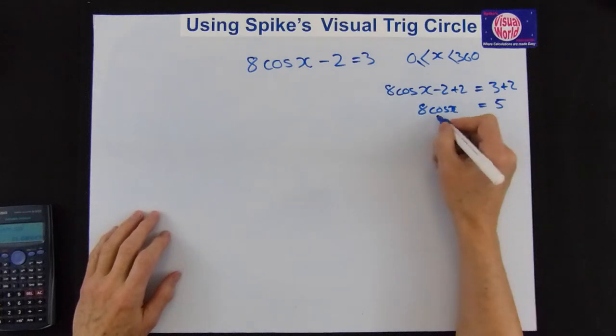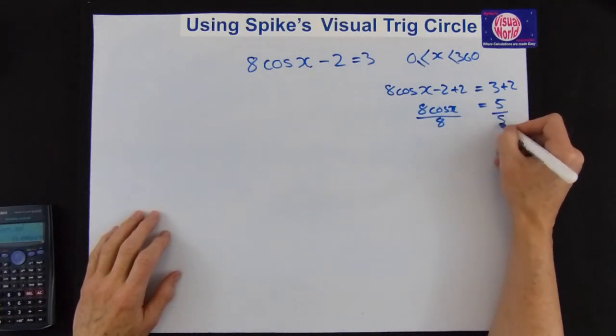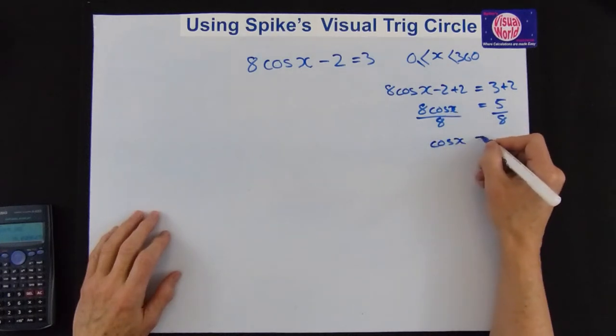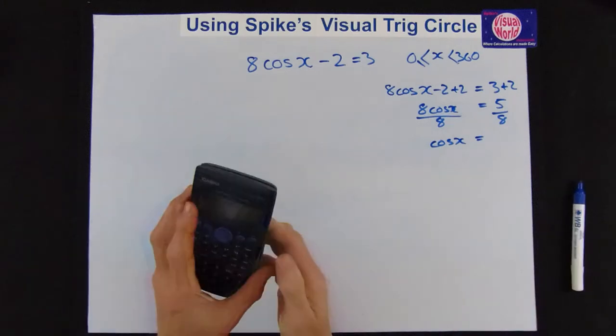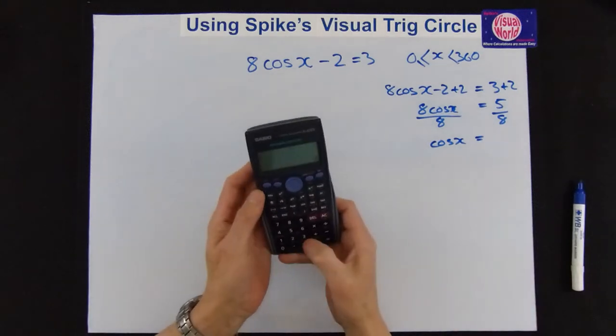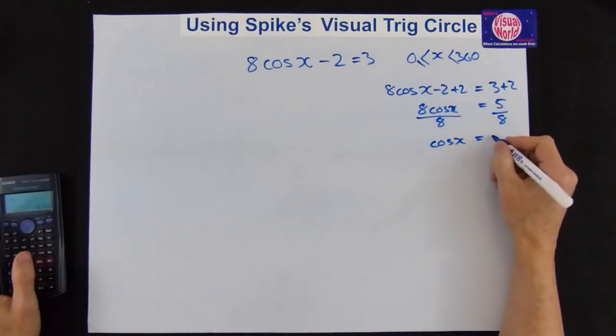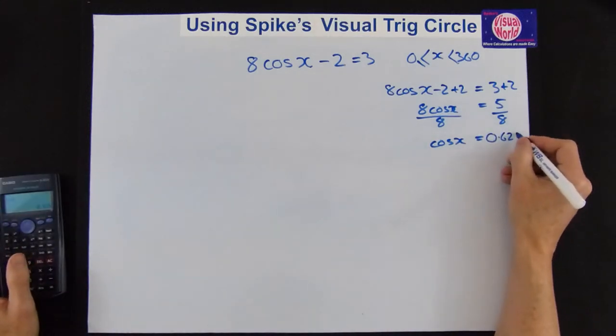Now we've got to get rid of the 8. So we divide by the 8 on both sides. And we get cos x equals, and it's 5 eighths. So we go 5 divided by 8 equals. And we get 0.625.